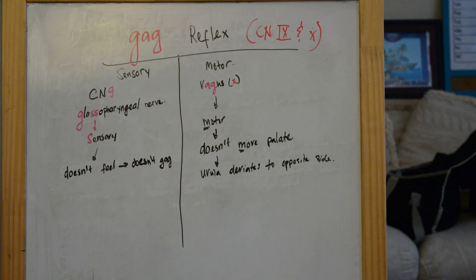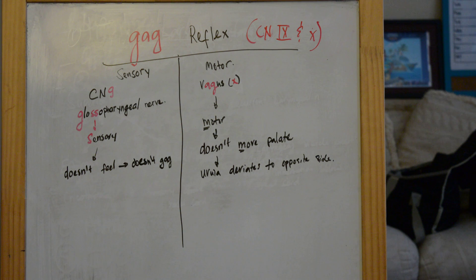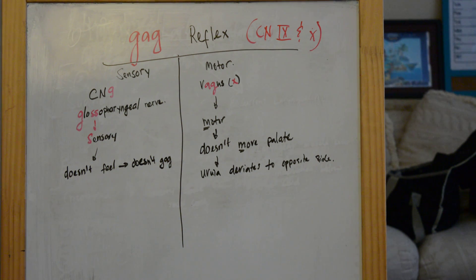If there is a lesion to cranial nerve 10, which is the motor component of the gag reflex, the patient can still sense the stimulus but the palate won't move. If the vagus nerve is lesioned on one side, for example on the right side, then the uvula will deviate to the left side.